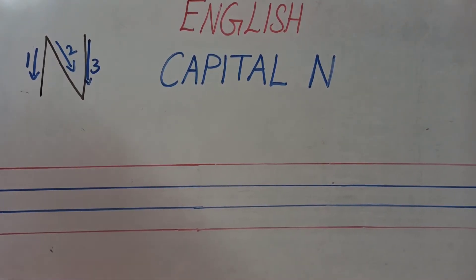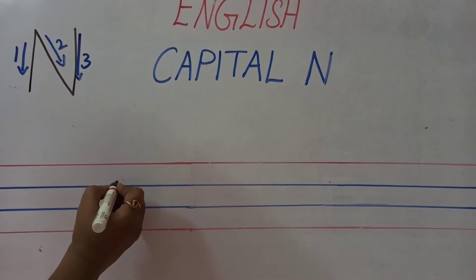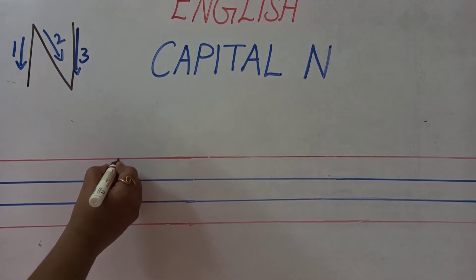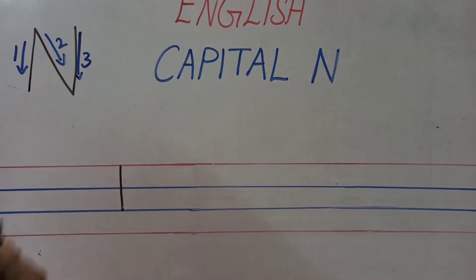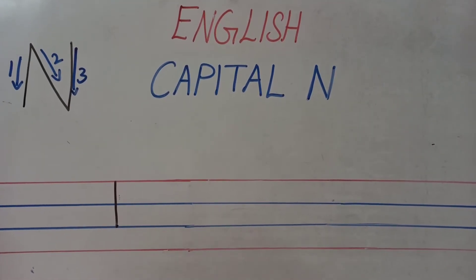So number 1, we are going to start as a standing line. Start from the red line, blue line, blue line. Stop. What is this line called? Standing line.